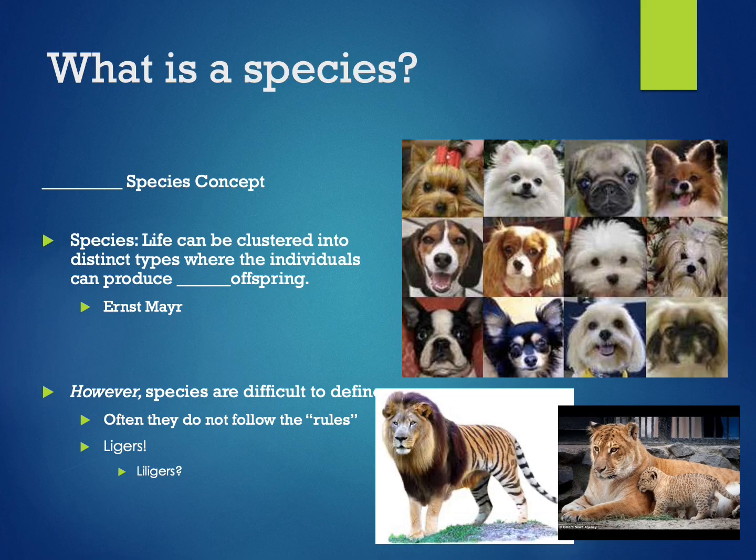Species are thus quite real and are not just categories thrust upon the living world by biologists. However, biologists have had a difficult time defining species. Species often do not abide by the rules that we impose on them. For instance, lions and tigers are clearly different species. However, they can produce offspring, which are ligers. Therefore, there are intermediates between lions and tigers, but these do not occur in nature.